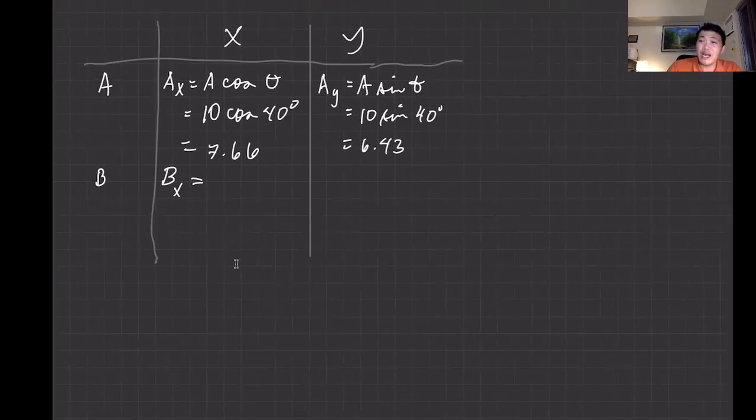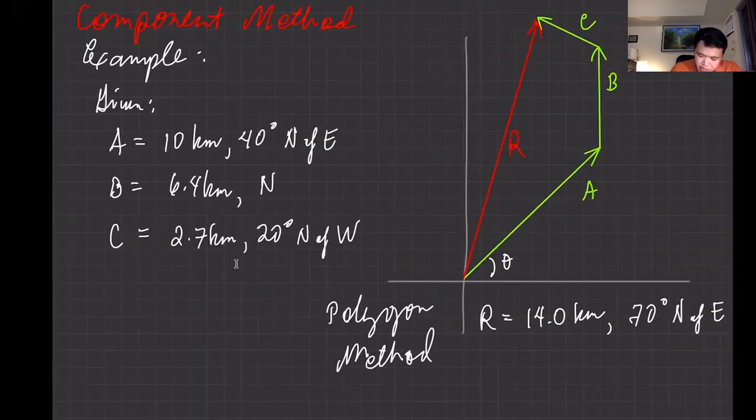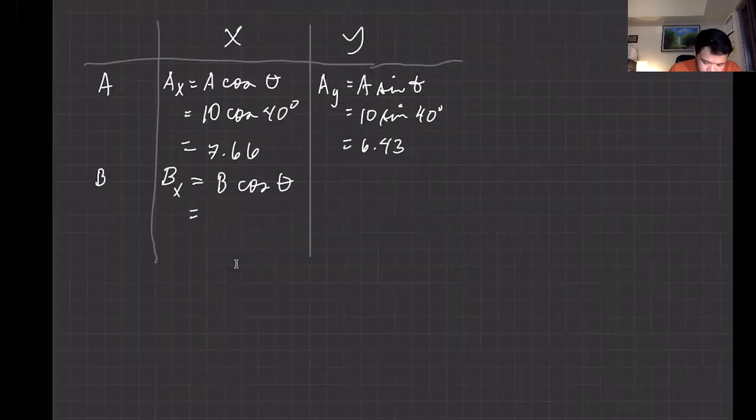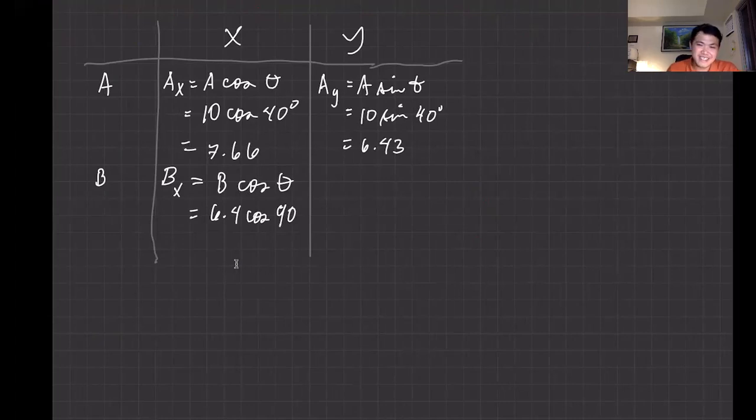So B cosine theta. Now for B, that's 6.4 kilometers north, and if it's north, the angle is basically 90 degrees. So 6.4 cosine 90, which—as you know, cosine of 90 is zero. That's easy. So easy to solve. For By, that's B sine theta, so it's similar: 6.4 sine of 90 degrees. And sine of 90 is 1, so 1 times 6.4, you should get 6.4 kilometers.